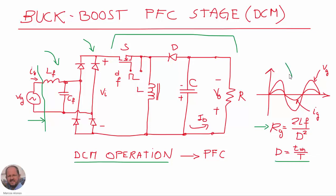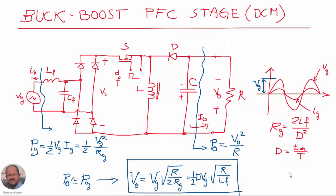From the point of view of the line, we are going to have waveforms like this one, in which we have the sinusoidal input voltage and then a sinusoidal input current which is going to be in phase with the input voltage. We can analyze this converter very easily to obtain, for example, the DC output voltage.